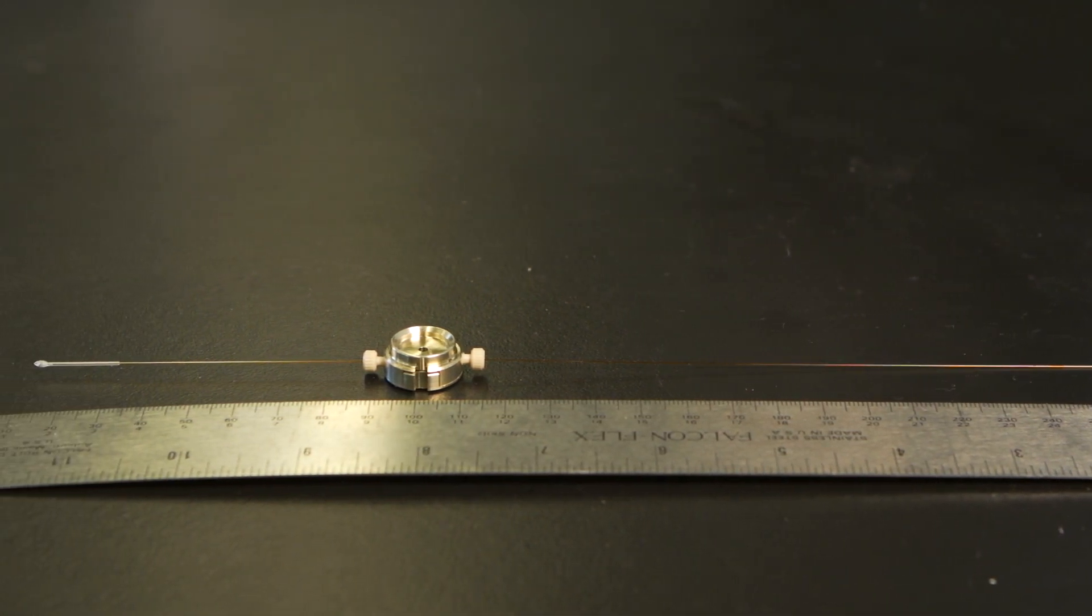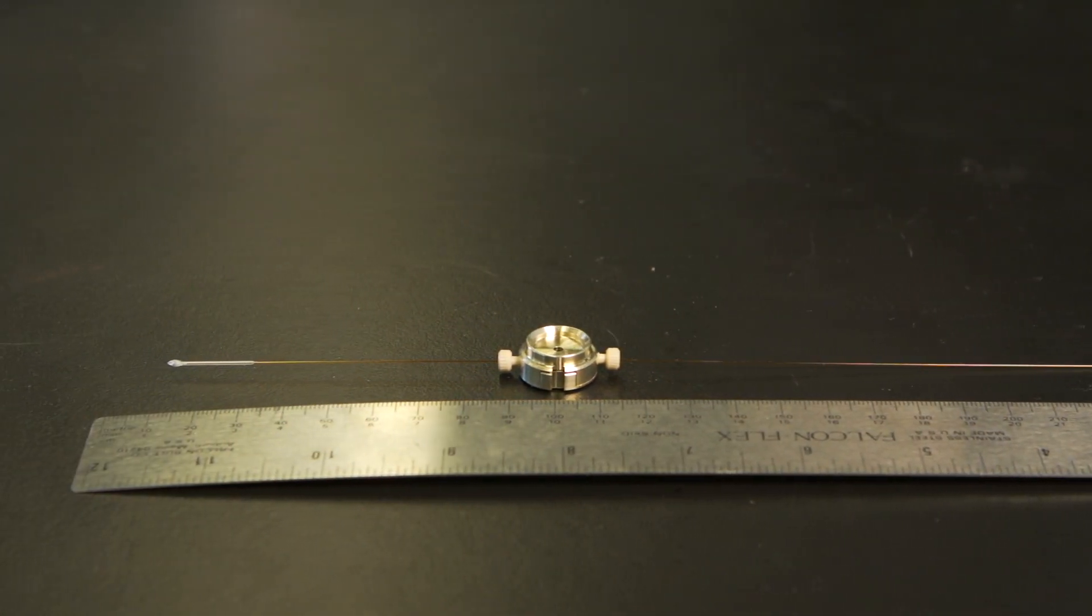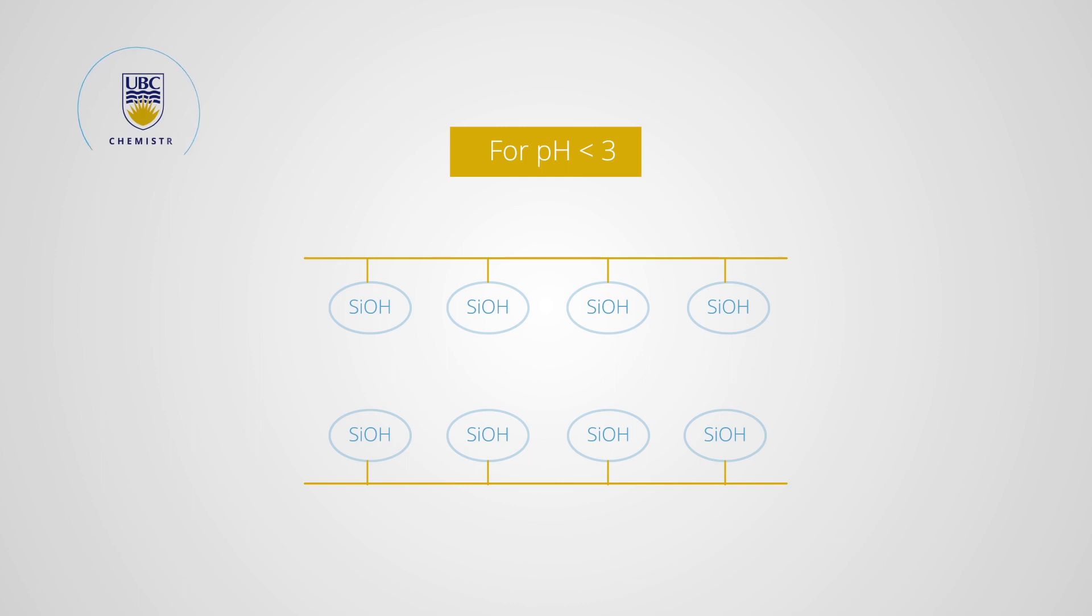The capillary is typically coated with a solid silenol phase. The pH of the buffer determines the charge on the wall inside the silica capillary. When the pH is less than 3, the silenol groups of the capillary wall are fully protonated.